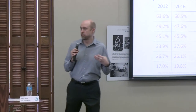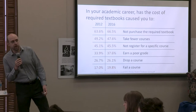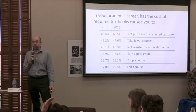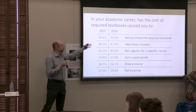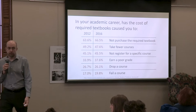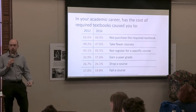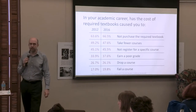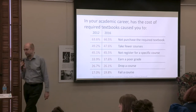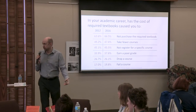So what's the impact of all these strategies? The cost is forcing students to take some academic risk. A study done twice over the last four years looked at that impact — between 60 and 70% hadn't purchased a required book; about half the students are not taking a specific course because the textbook was too expensive; students are earning poor grades, dropping courses, or failing the course. There is really no institution in this country that should be okay with this. Every institution has goals for retention, graduation rates, and student success — this directly impacts that.